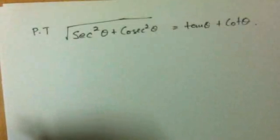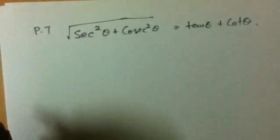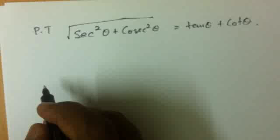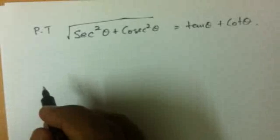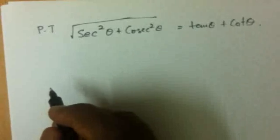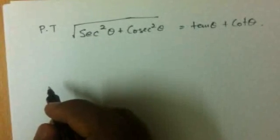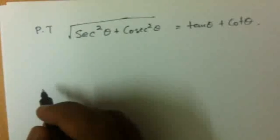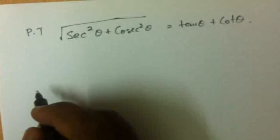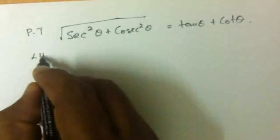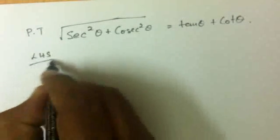Hello everyone. In this particular video, we will be solving this particular problem that you are seeing here. It is: square root of secant squared theta plus cosecant squared theta is equal to tan theta plus cot theta. We need to prove this. So let's take the left hand side.